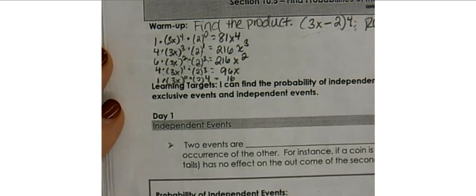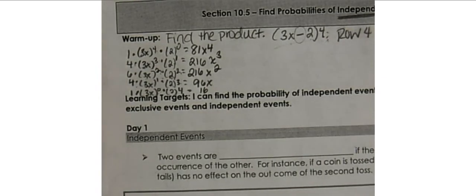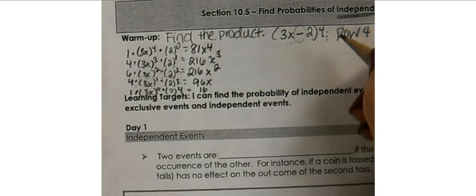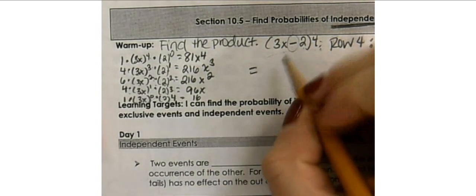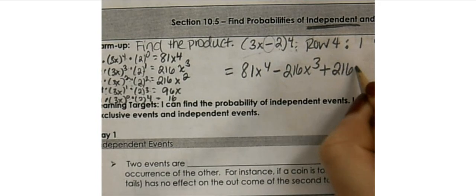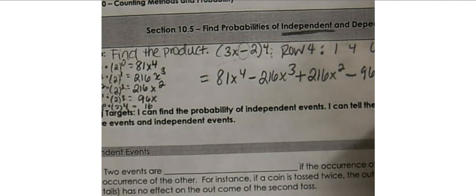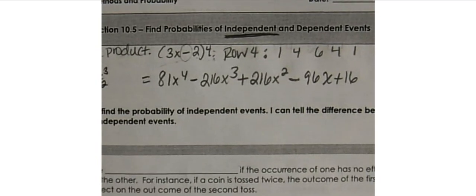Finally, anything to the zero power is just 1, so 1 times 1 times 2 to the fourth, which is 16. Because the sign between our terms is a minus, we alternate signs. So the final answer is 81x⁴ - 216x³ + 216x² - 96x + 16.